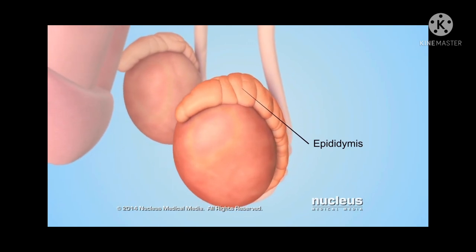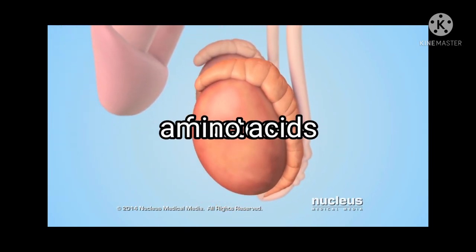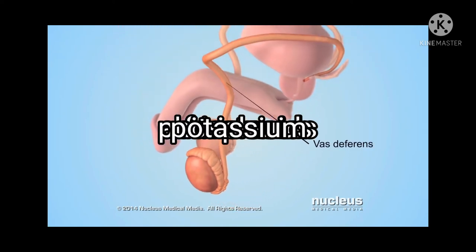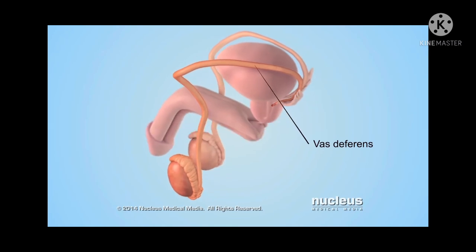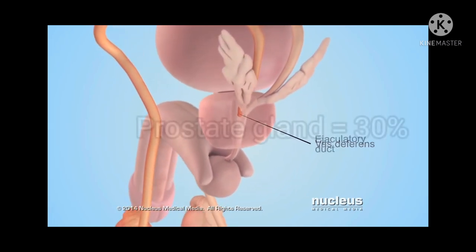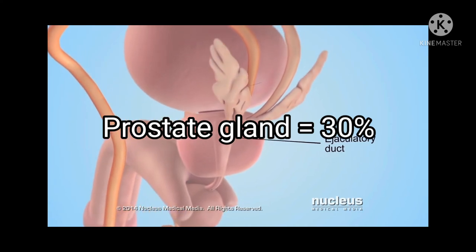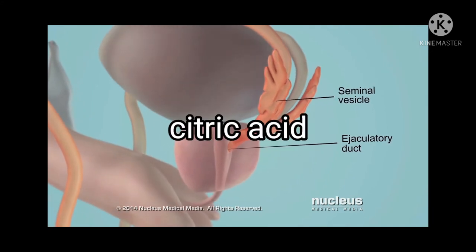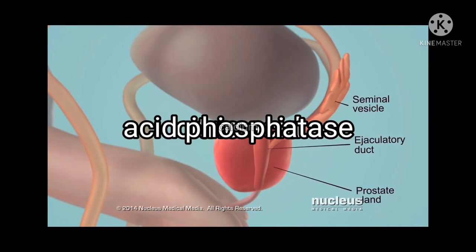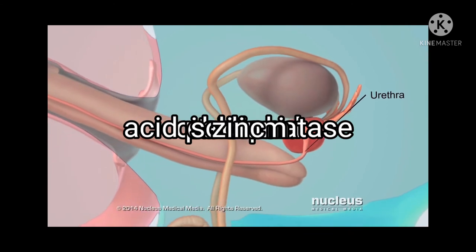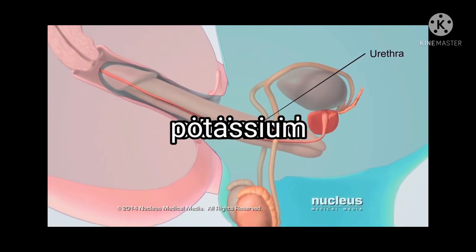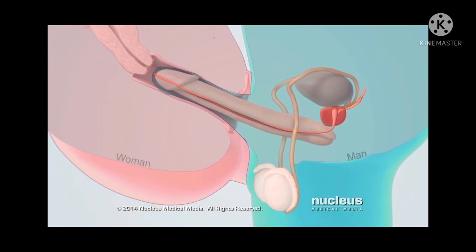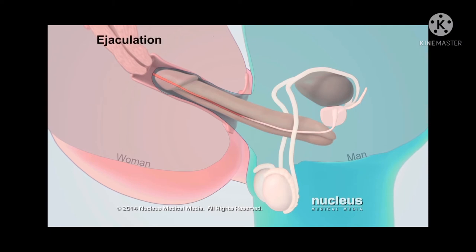Fluids contributed by the seminal vesicles are approximately 60% of the total semen volume. These fluids contain fructose, amino acids, citric acid, phosphorus, potassium, and hormones known as prostaglandins. The prostate gland contributes about 30% of seminal fluid. Its secretions contain citric acid, acid phosphatase, calcium, sodium, zinc, potassium, protein-splitting enzymes, and fibrinolysin. A small amount of fluid is secreted by the bulbourethral and urethral glands, which is a thick, clear, lubricating protein commonly known as mucus.